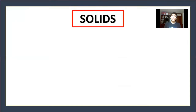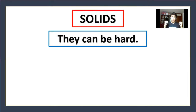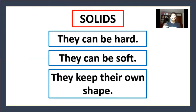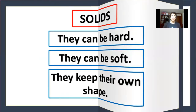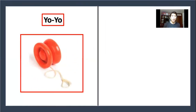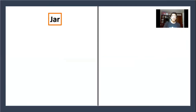Now we are going to talk about solids. They can be hard or soft, and they keep their own shape. For example, a yo-yo — this is a solid object. A chair is also a solid object. We also have a jar — jar is a solid object too.